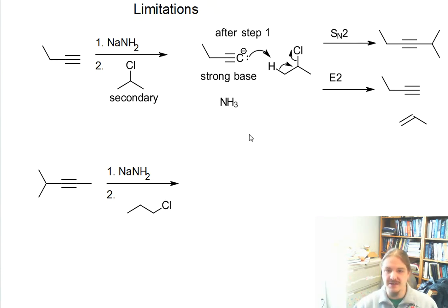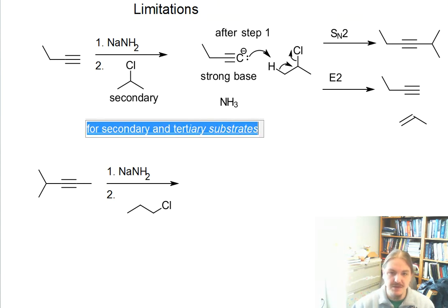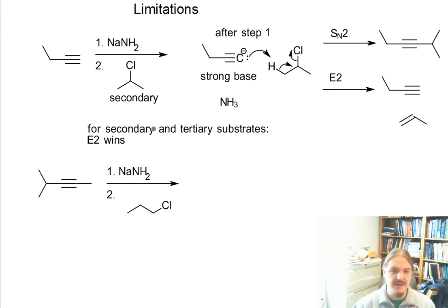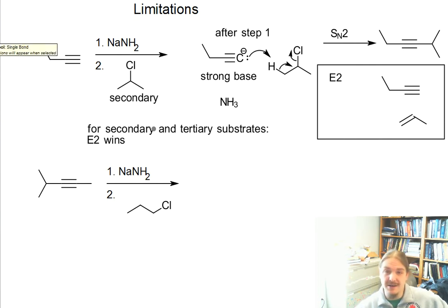For secondary and tertiary substrates, E2 wins. So in this particular case, we would get the elimination group of products as our major product. That's trouble, because if we wanted to form the alkyne through the substitution reaction, we might have to do things a little differently. I'll do an example in a minute that talks about how we could make that alkyne.